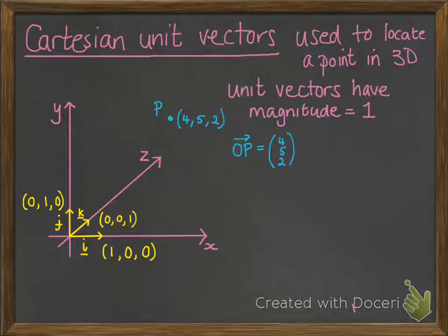The vector OP tells us where it is in relation to the origin. So we have this column vector 4, 5, 2. We can put those together combining with those unit vectors to write this in a different way. So this would be the same as 4 lots of i plus 5 lots of j plus 2 lots of k. And it's like giving directions from the origin up to our point P.